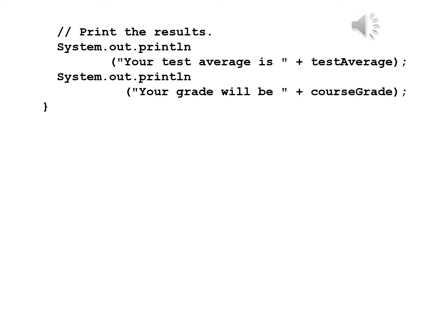We finish the main method by printing the results. System.out.println with "Your test average is" plus testAverage. Then System.out.println with "Your grade will be" plus courseGrade, and a close brace for the main method. Obviously, I would have a class header at the beginning with an open brace, and after this method, another close brace to close the class.